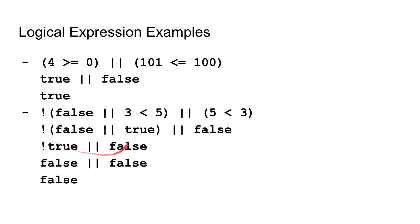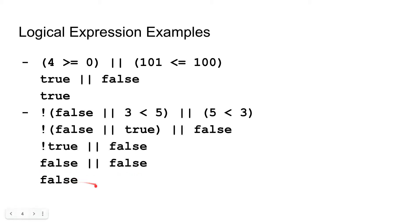Then we evaluate the inner parentheses: false or true is true, from our truth table. Then we not that true, so we get false. We are then left with false or false, which is false.